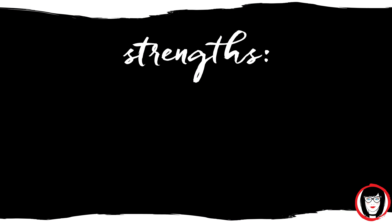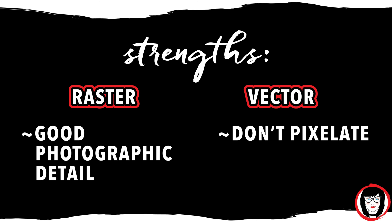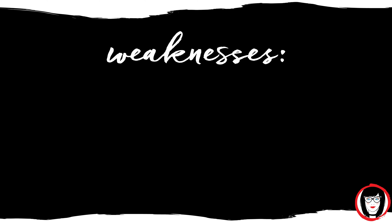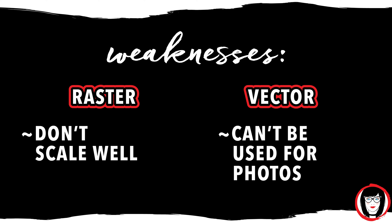Each type of image — vector or raster — has their own strengths and weaknesses. Strengths for raster graphics: they can have good photographic detail. For vector graphics: they don't pixelate and they scale well. Weaknesses: raster images don't scale well, and vector graphics can't be used for photos.